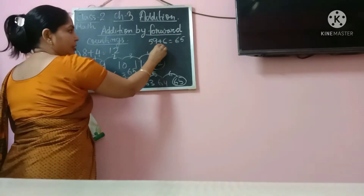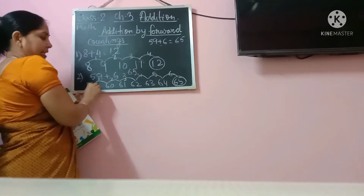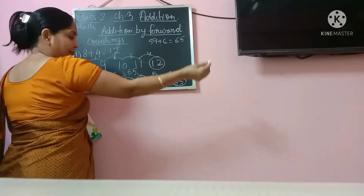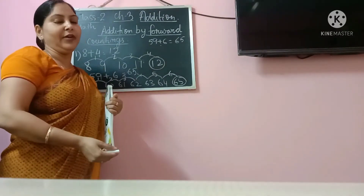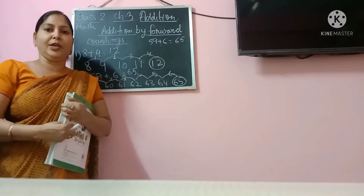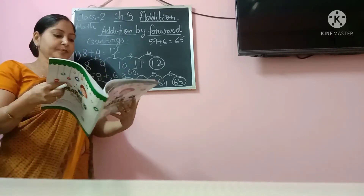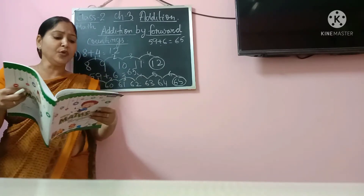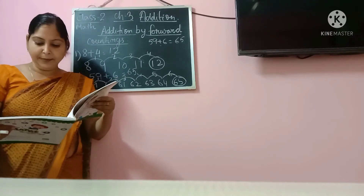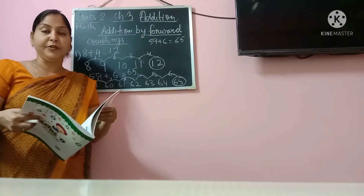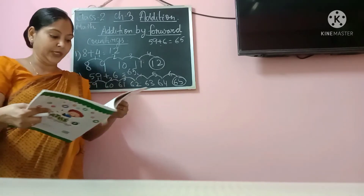Write the question and after that start writing 59, then show the 6 steps movement and then get the final answer. That will be the right way of doing forward counting. Now, if you look at your book on page number 38 and page number 39, there are few questions given based on this forward counting.